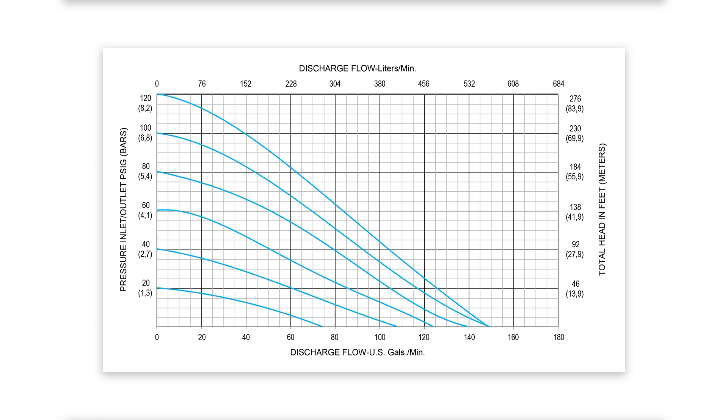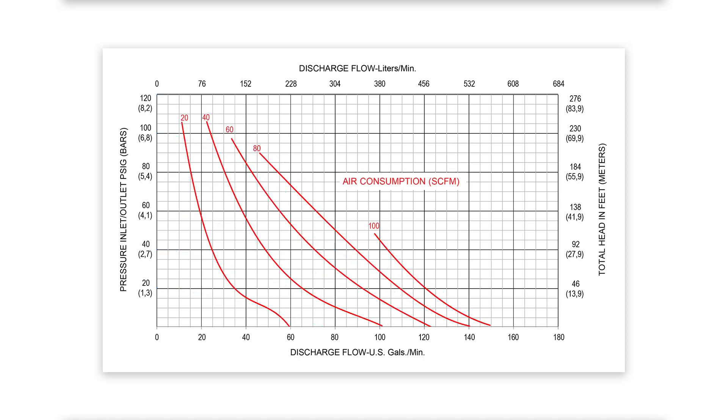The blue curved axis identifies the air inlet pressure. The red curved axis identifies energy consumption or air consumption of the AODD pump. AllFlow's AODD pump's air consumption is measured in standard cubic feet per minute.